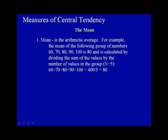The mean. The mean is the arithmetic average. For example, the mean of the following group of numbers — 60, 70, 80, 90, and 100 — is 80, and is calculated by dividing the sum of the values by the number of values in the group.